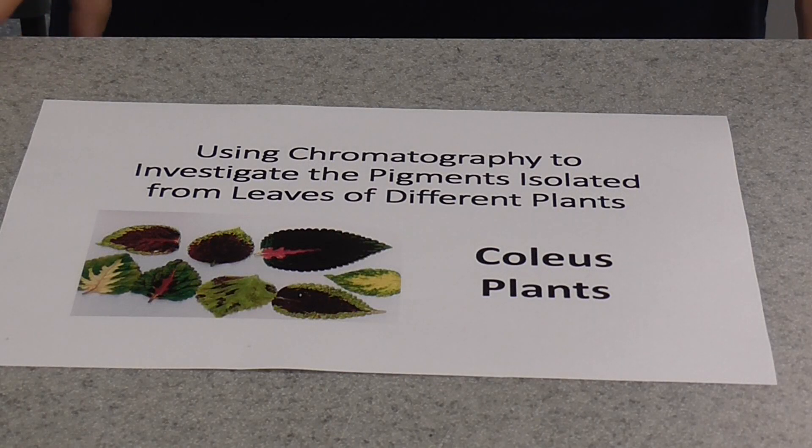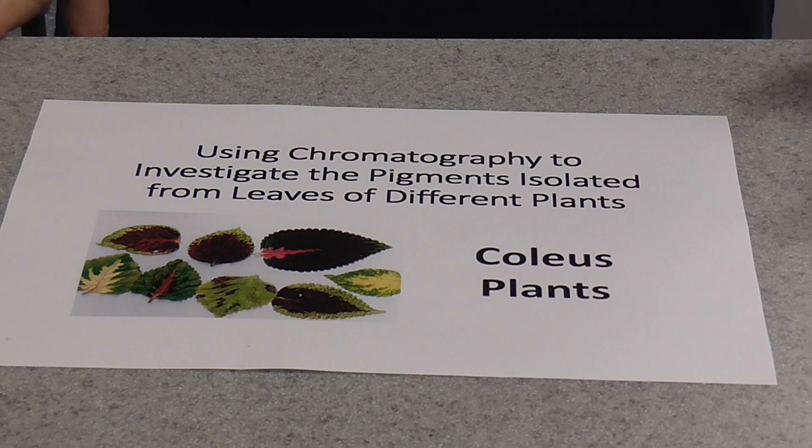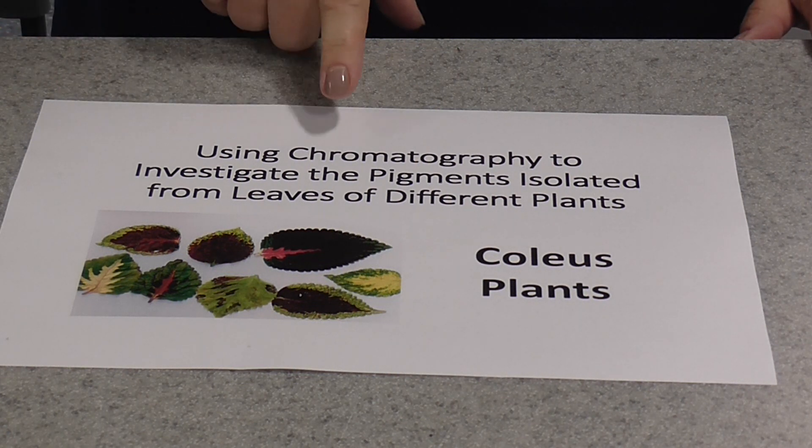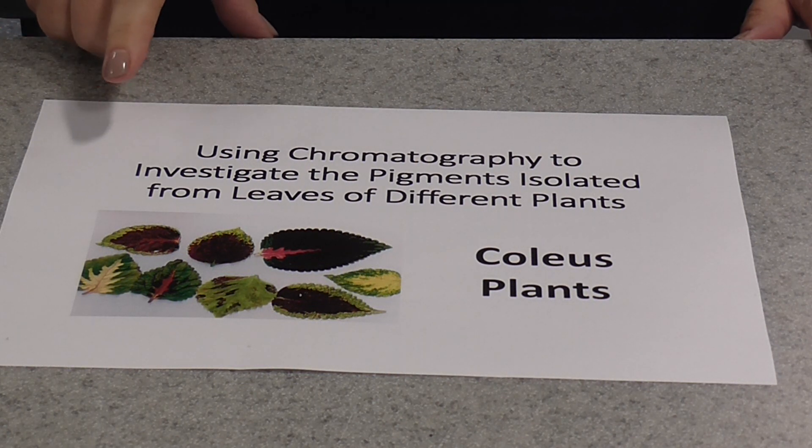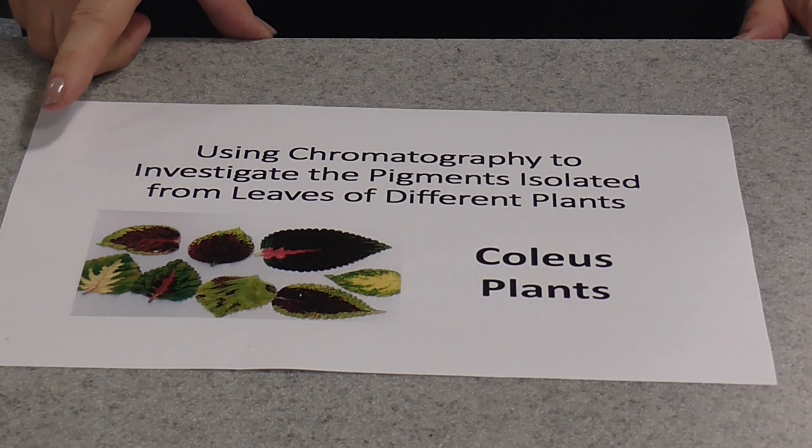I'm going to show you how to do one of the A-level biology practicals. This is required for A-level but not for AS-level. It's using chromatography to investigate the pigments isolated from leaves of different plants.